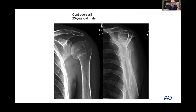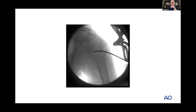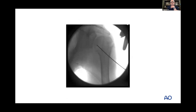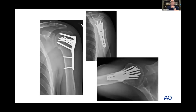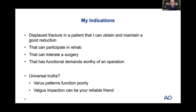This is easy to fix: you can get good medial cortical support, he has good bone, and you can give an anatomic reduction with an opportunity for really good function. In short, my indications are a displaced fracture in a patient where I can obtain and maintain a good reduction, who can participate in rehab, can physiologically tolerate surgery, and has functional demands worthy of an operation. Universal truths: varus patterns function poorly, displace more frequently, have a higher non-union rate, and valgus impaction can be a reliable friend when treated non-operatively.